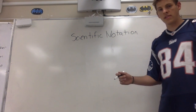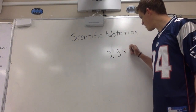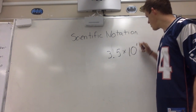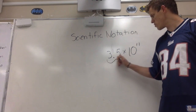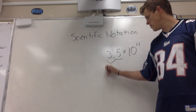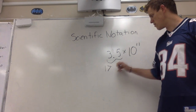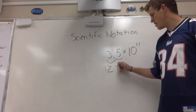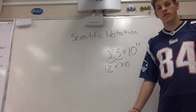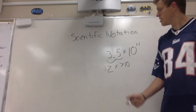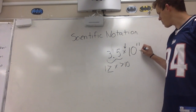So what makes a number in scientific notation? For example, 3.5 times 10 to the 11. This is in scientific notation for a few reasons. One, because this right here is between 1 — it's greater than or equal to 1 and it is less than 10. So that's one of the first criteria for whether something is in scientific notation. Second is that it's being multiplied by a power of 10.